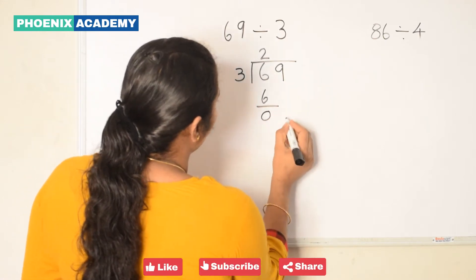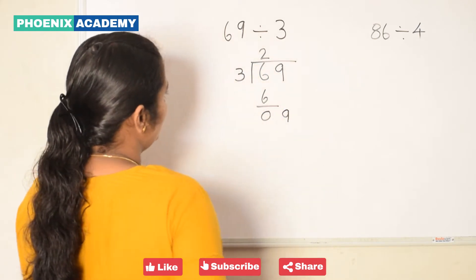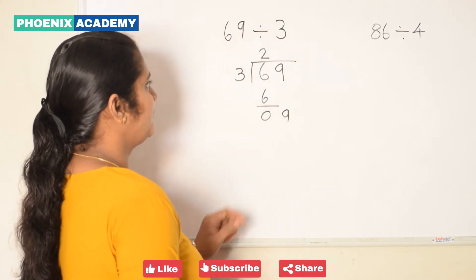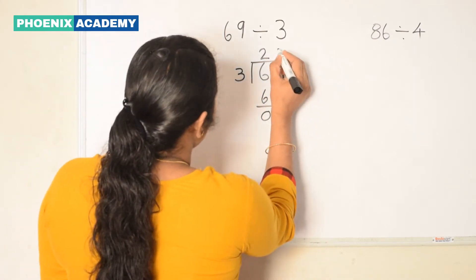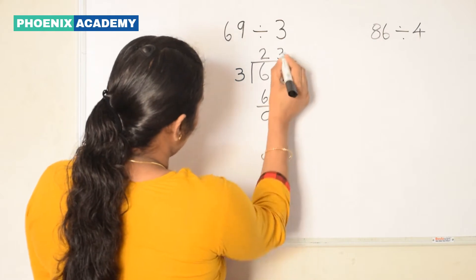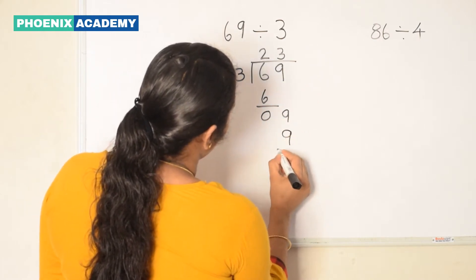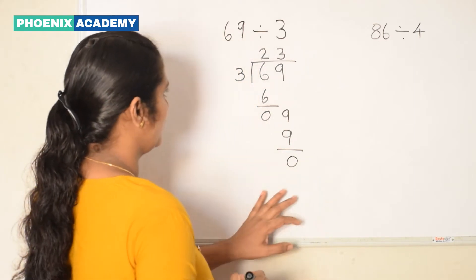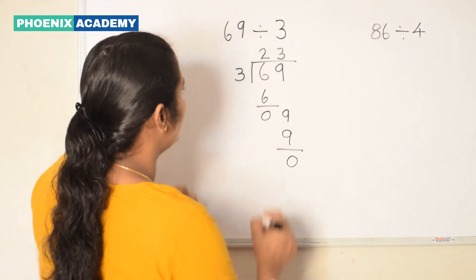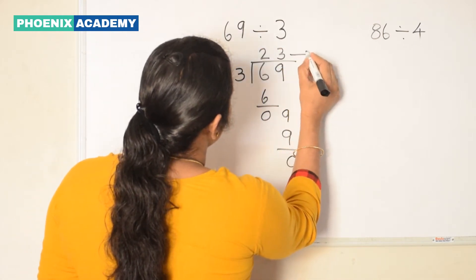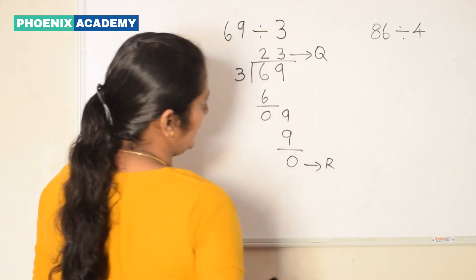Bring down the 1s digit and divide by 3. 9 divided by 3. 3 3s are 9. So we write 3 at the quotient's place, 9 below the dividend, and subtract. We get 0. So 69 divided by 3, we get 23 as the quotient and 0 as the remainder.